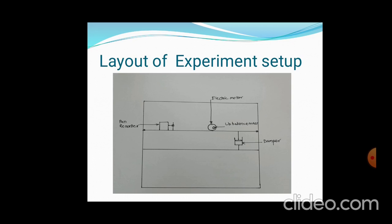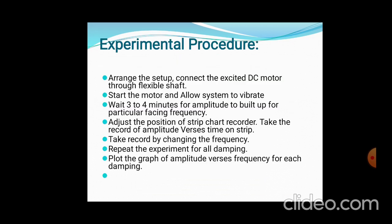This is the experimental procedure. We arrange the DC motor, adjust some amplitude, and take three readings: the undamped situation, variation in damping, and with that particular plot the graph. It is quite simple.